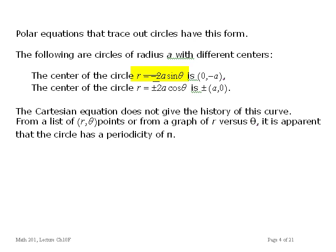Polar equations of the form we saw before trace out circles. Here are the typical equations: r equals plus or minus 2a times the sine of theta — a circle of radius a, centered at x equals 0 and y equals plus or minus a. Here's another form: r equals plus or minus 2a times the cosine of theta — another circle of radius a, centered at x equals plus or minus a and y equals 0.